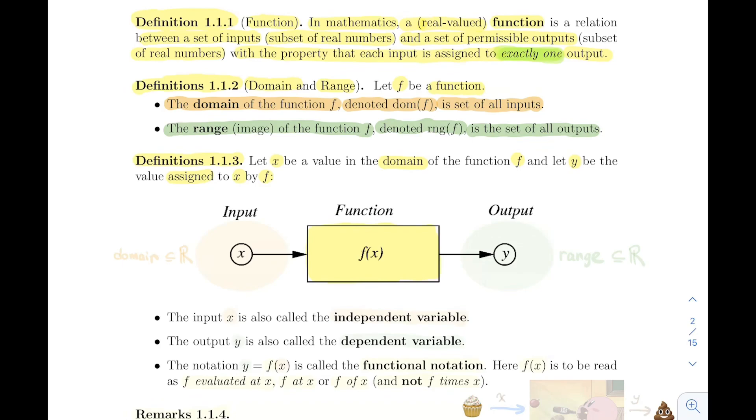The x comes from the domain, which is a subset of the real numbers, and then it goes inside f. F does something to it, maybe through an equation or something else, and then it spits out the y. The y will be somewhere inside the range, which is a subset of real numbers. So x comes from the domain, goes inside the box, it gets transformed somehow, and then it goes outside of the box and this output is in the range of that function.